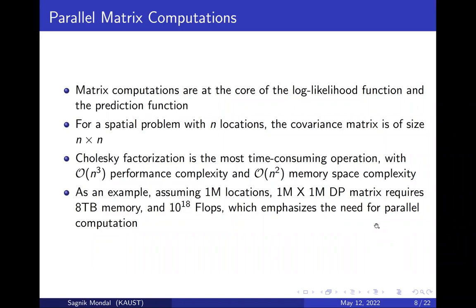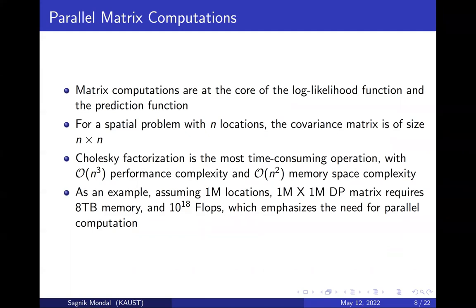Computation of both the log-likelihood and the prediction involves matrix operations, among which matrix inversion is the most challenging. For spatial data with N locations, the covariance matrix is N×N. Cholesky factorization requires O(N³) computational complexity and O(N²) memory space. For example, when N is 1 million, we have a covariance matrix of size 1 million×1 million, which consumes 8 terabytes of memory and requires 10^18 operations. This emphasizes the need for parallel computation.